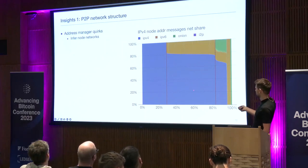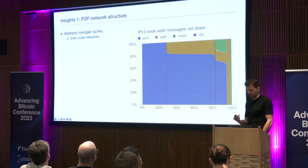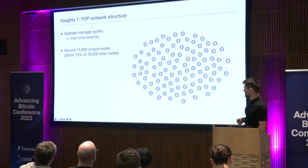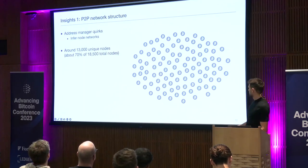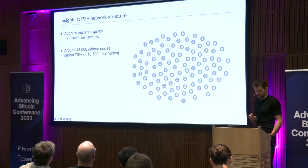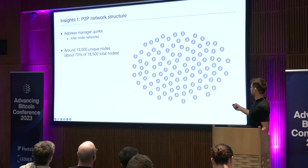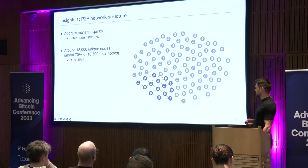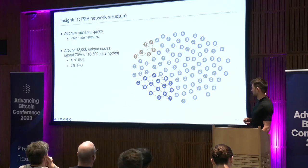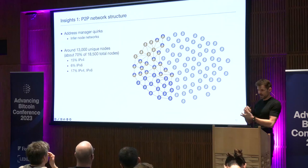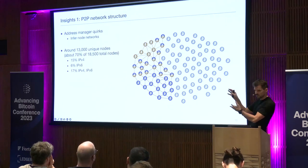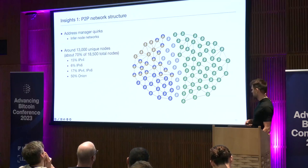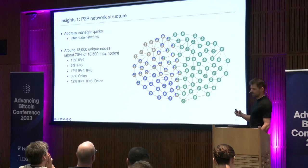From this analysis you can estimate there are around 13,000 unique nodes, which is only about 70% of all active nodes measured. Here's a visualization of what the network structure looks like — each Bitcoin node represents roughly 1% of the network. 15% of the network runs IPv4-only nodes, 6% run IPv6-only, and 17% run both IPv4 and IPv6, which serves as a conduit between these two sub-networks. Interestingly, 50% of the network is running Onion-only, which seems to be Umbrel. The rest are nodes running all three networks, connecting the two parts together.